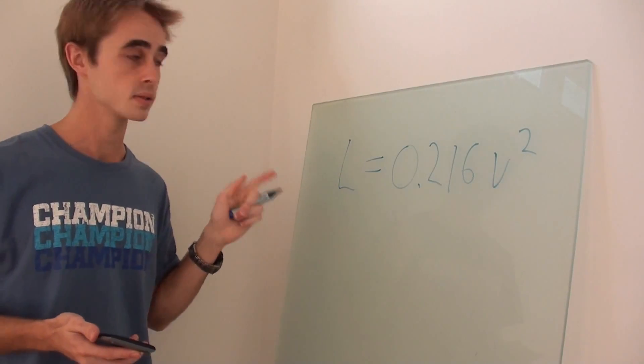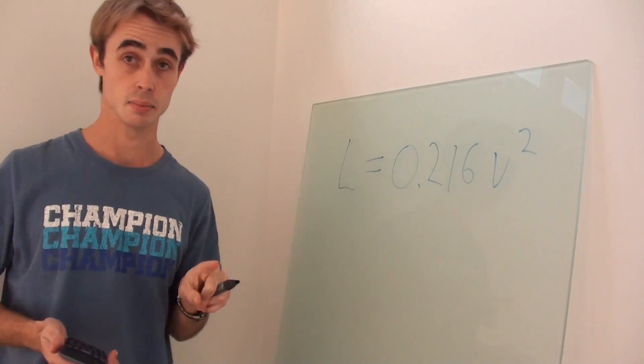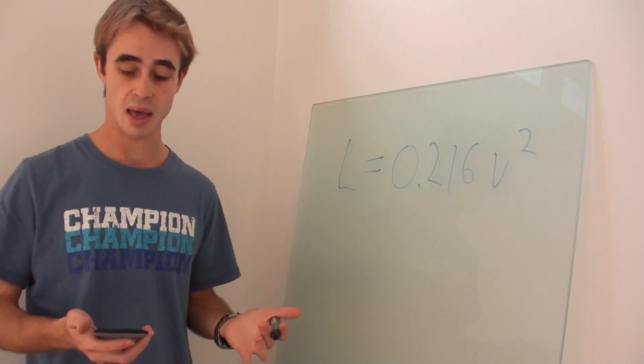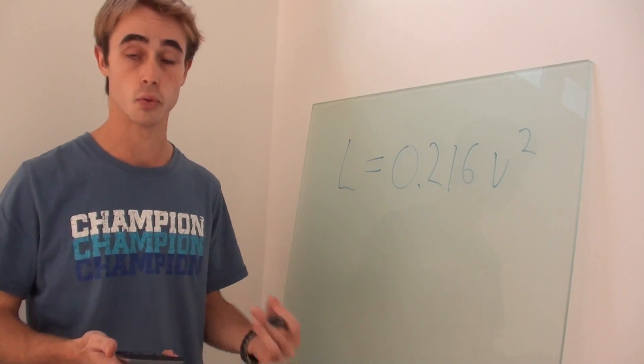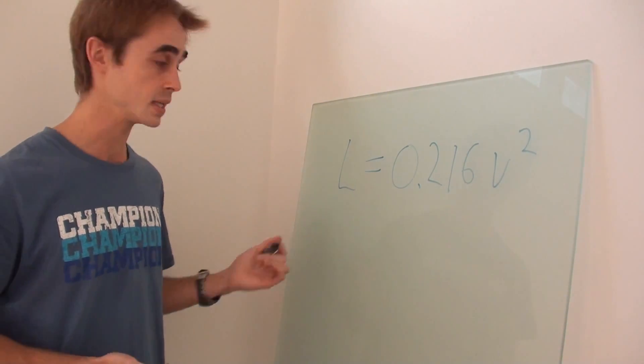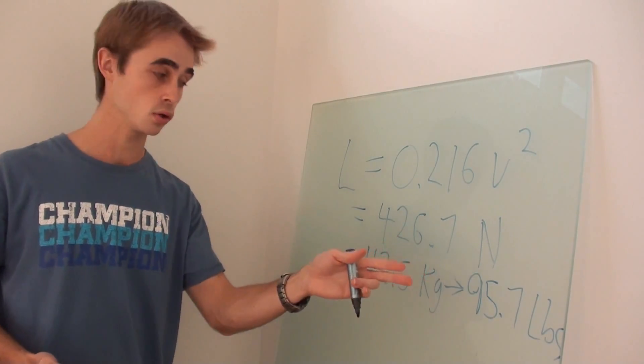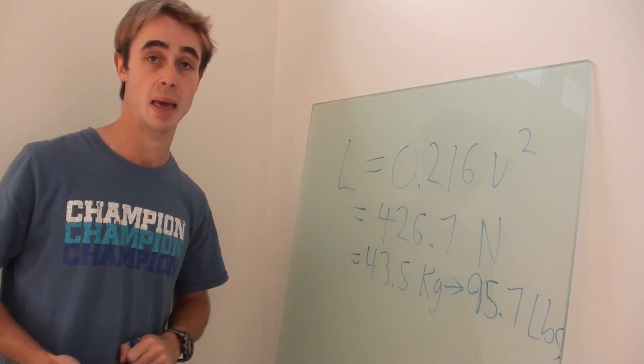Which means that our lift in newtons equals 0.216 times our velocity squared in meters per second. Let's say you're doing about 160 k's an hour, which is 100 miles an hour, which is 44.4 meters per second, then the lift available is 426.7 newtons, which is 43.5 kilograms, or 95.7 pounds.